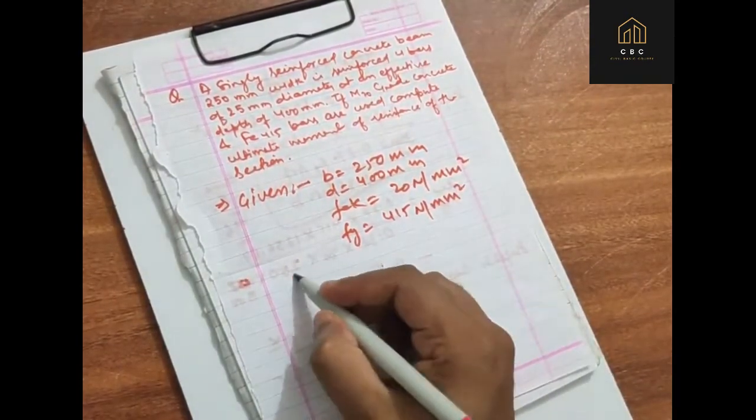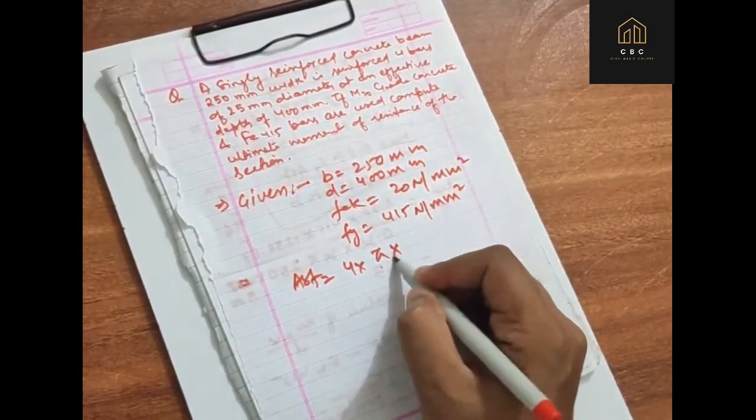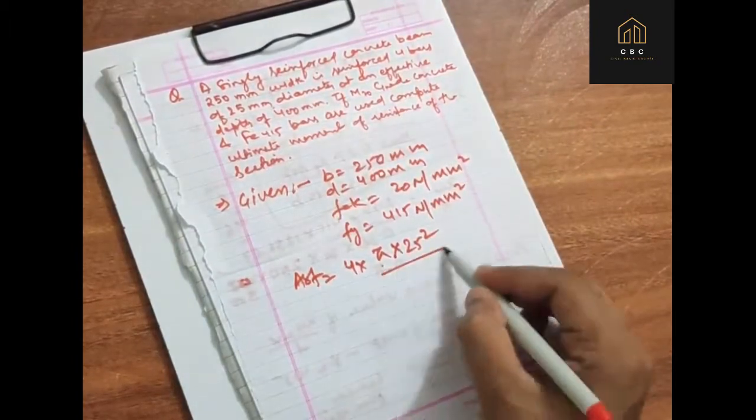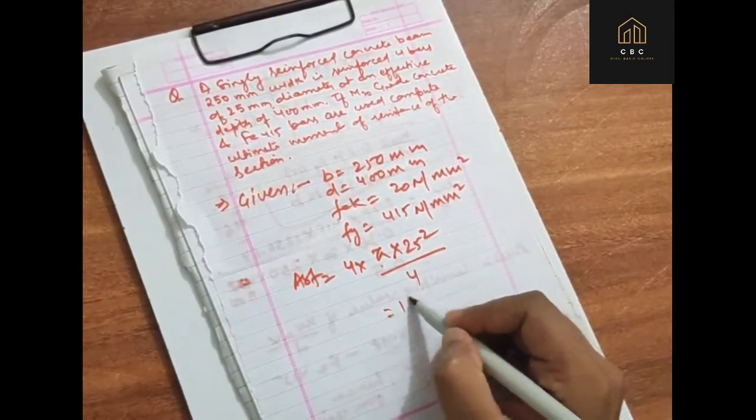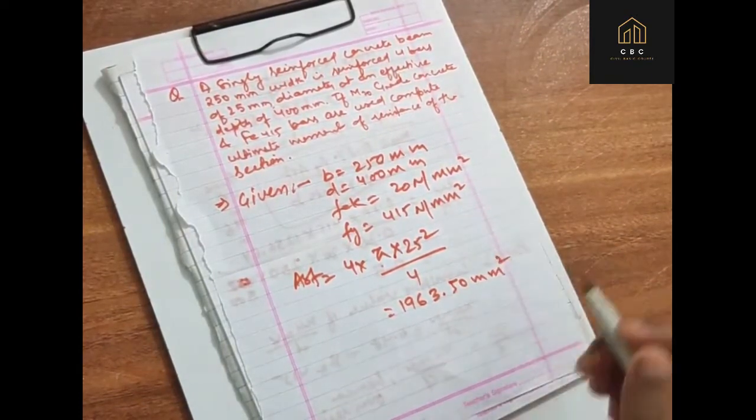Now let's look at AST. The given is 4 into pi into 25 mm diameter by 4. This equals 1,963.50 mm square.